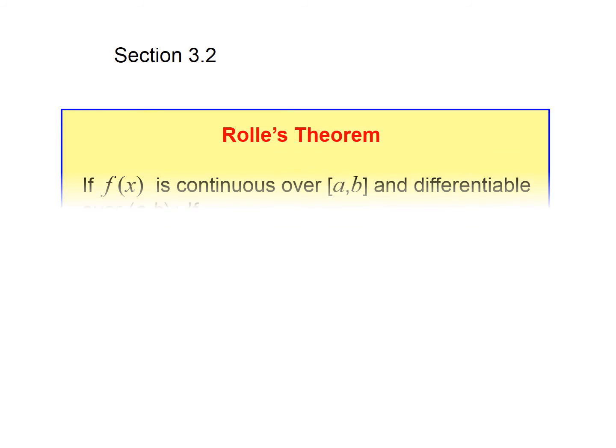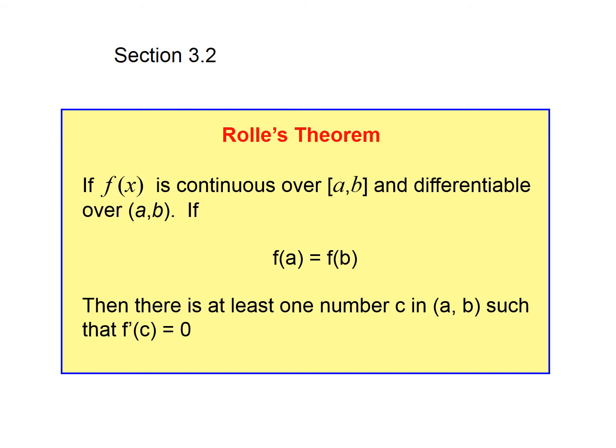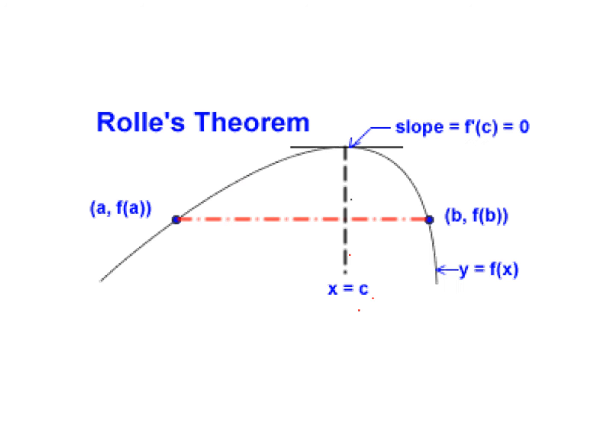Rolle's Theorem states: if a function is continuous and differentiable and there is a place where f(a) equals f(b), then there is at least one number such that the derivative is 0. Graphically, we have f(a) and f(b) as equivalent points, and there has to be some place on that curve where the derivative is 0.